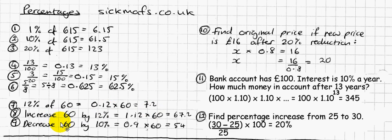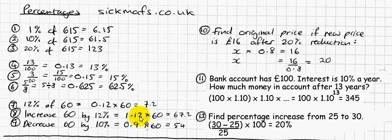Building on that — if you want to increase 60 by 12%, that means I want the original 60 plus 12%. That's the same as saying 100% of the original plus 12% of the original, which is 112% of the original. If 12% is written as 0.12, then 112% is written as 1.12. So you simply do 1.12 × 60, and you get 67.2.